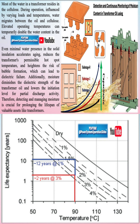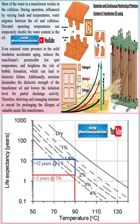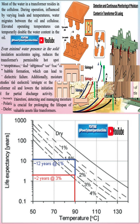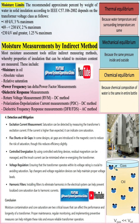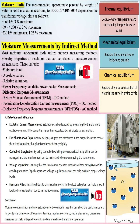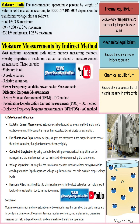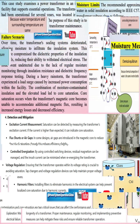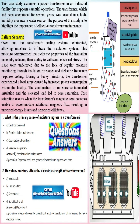Moisture contamination in a transformer is one of the most critical issues that can severely affect the transformer's performance, reliability, and lifespan. Power transformers rely on high-quality insulating materials, primarily transformer oil and cellulose-based paper, to maintain dielectric integrity. However, these materials are hygroscopic, meaning they have a strong affinity for absorbing moisture from the surrounding environment, leading to moisture contamination over time.